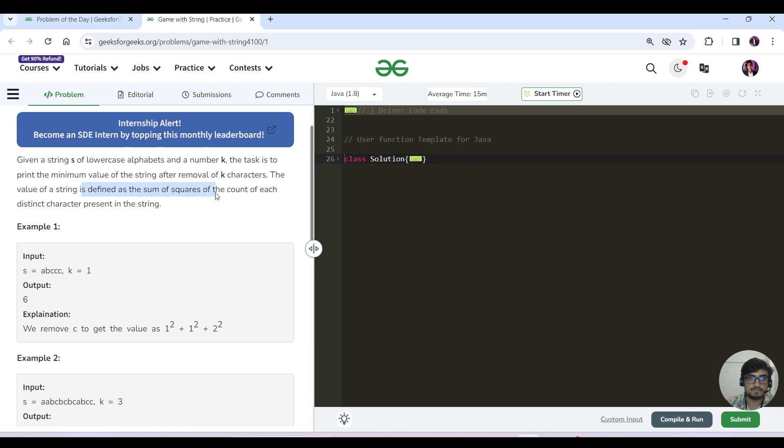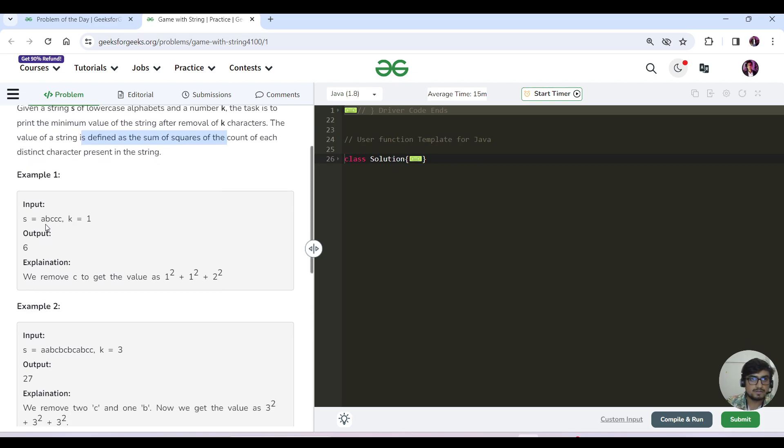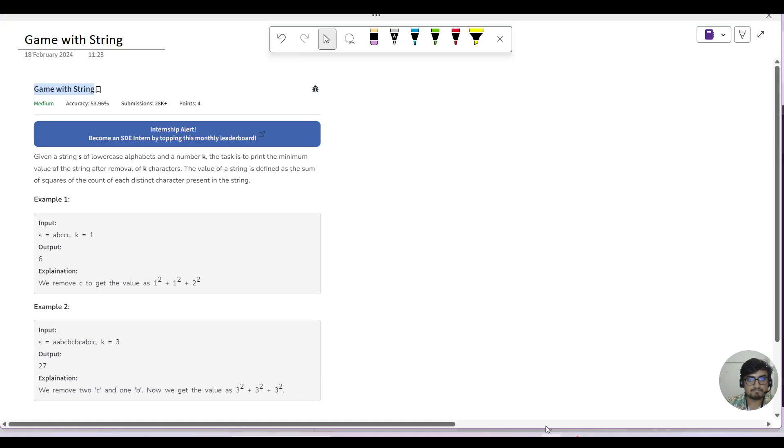The task is to print the minimum value of the string after the removal of k characters. The value of the string is defined as the sum of the squares. So first of all, what is the input and output? They have said that you have A, B, and CCC, and k equals to 1, which means you can remove one character.